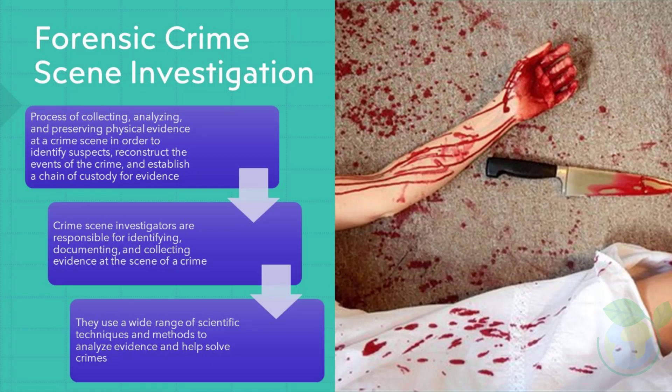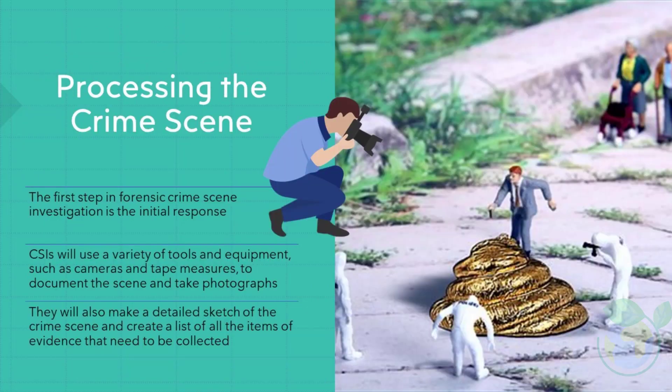Forensic Crime Scene Investigation is the process of collecting, analyzing, and preserving physical evidence at a crime scene in order to identify suspects, reconstruct the events of the crime, and establish a chain of custody for evidence. Crime scene investigators are responsible for identifying, documenting, and collecting evidence at the scene of a crime. They use a wide range of scientific techniques and methods to analyze evidence and help solve crimes. The first step is the initial response, which involves securing the crime scene and identifying any potential evidence. CSIs use tools such as cameras and tape measures to document the scene, take photographs, make a detailed sketch, and create a list of all items of evidence to be collected.